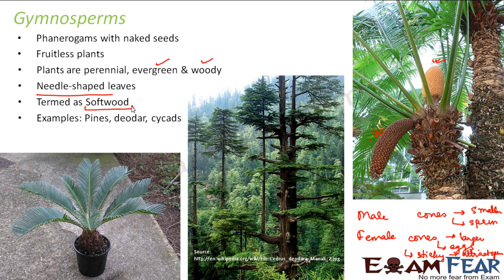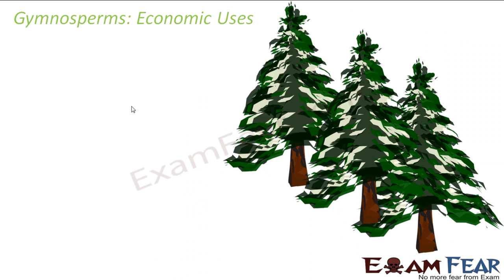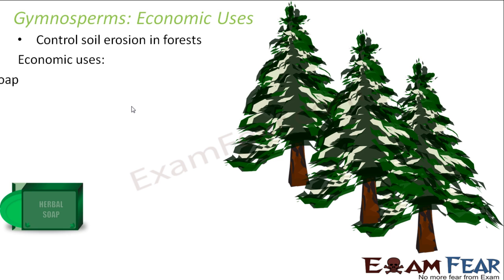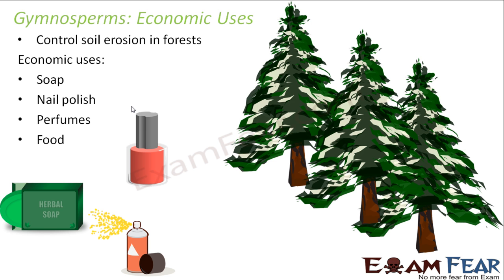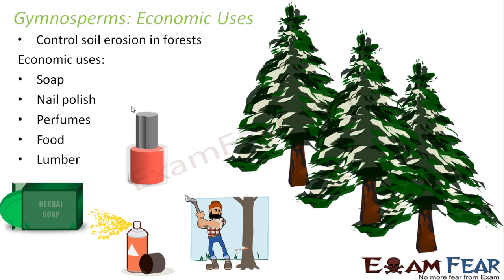Examples of gymnosperms are pines, deodar, and cycads — all similar-looking trees falling under this category. Economic uses include controlling soil erosion in forests by binding the soil and preventing it from being washed away by water. They also help in manufacture of soap, nail polish, and perfumes, are a source of food, and provide lumber — wood used in making furniture and other items.